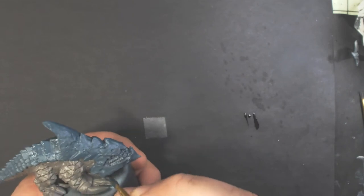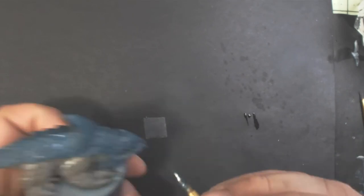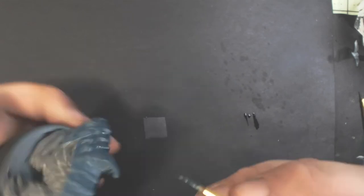Okay, next up we've got some P3 Coal Black. And we're just going to paint all of the teeth and the area in between the plates on his face.